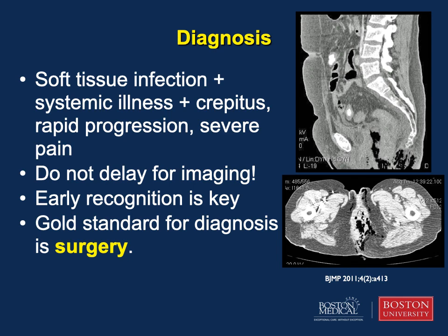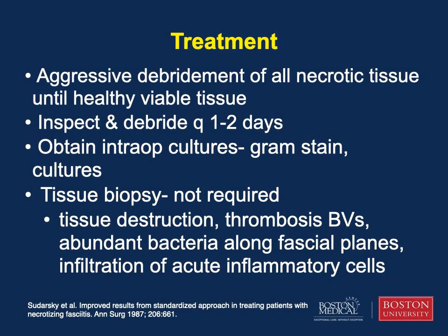Early recognition is key, and the gold standard for diagnosis is surgery. Increased time from admission to debridement and inadequacy of initial debridement have repeatedly been associated with increased mortality. The key tenet of treatment is surgical debridement of all necrotic tissue. The excision should extend to healthy bleeding tissue at all margins and often needs to be carried significantly beyond the area of skin changes, because subcutaneous disease is usually much greater than can be appreciated on skin examination. Frequent debridements are performed every one to two days until all necrotic tissue is removed. Intraoperative cultures should be obtained to help tailor antibiotics. Tissue biopsy, although not required, will show tissue destruction, thrombosis of blood vessels, bacteria, and infiltration of acute inflammatory cells.